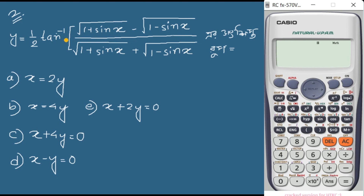So we can find the angle of x is equal to 30 degrees. So x is equal to 30 degrees. So if we can find the equation to find the map of MCQ, x is 30 degrees.